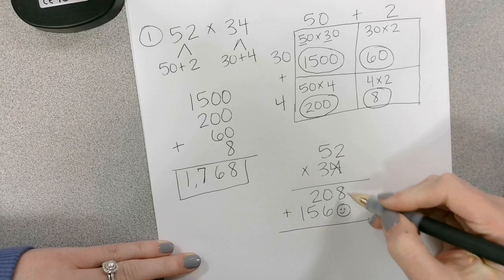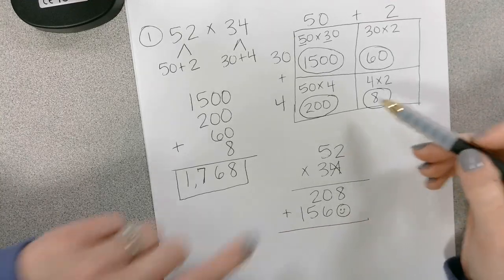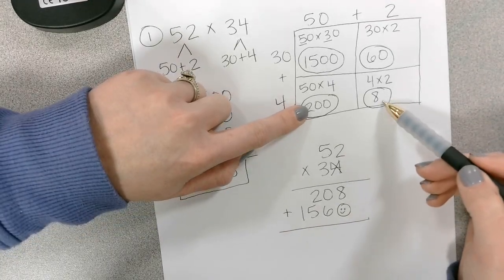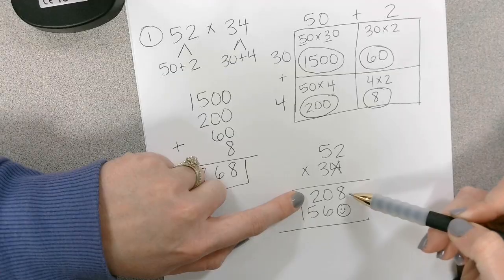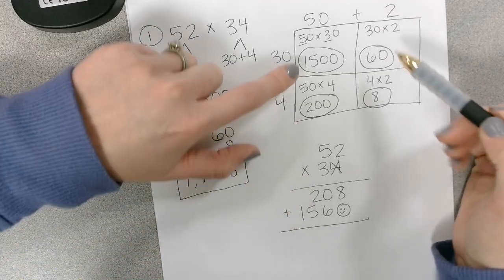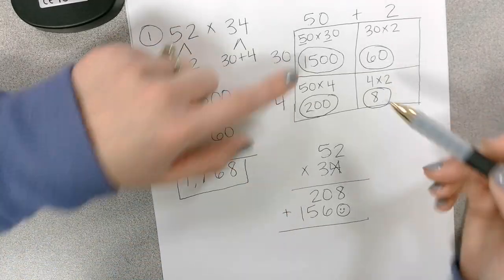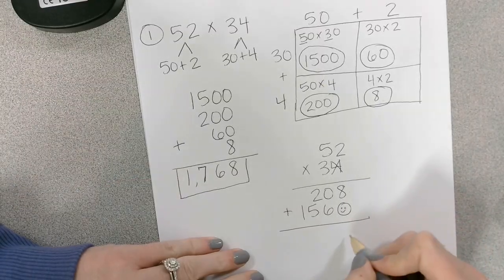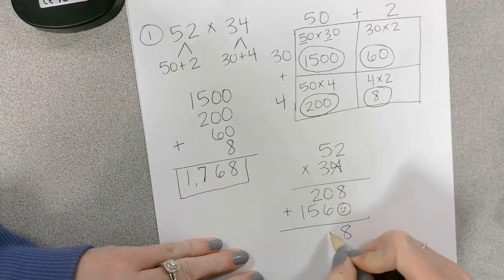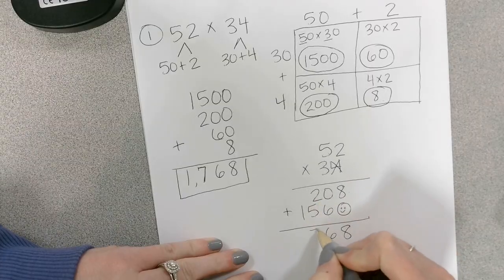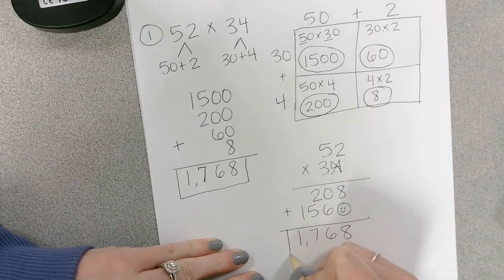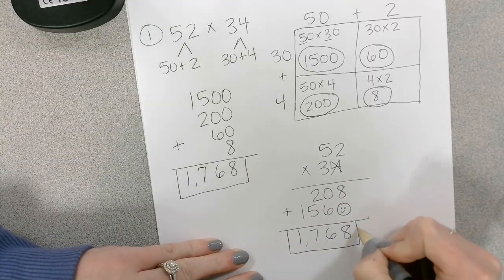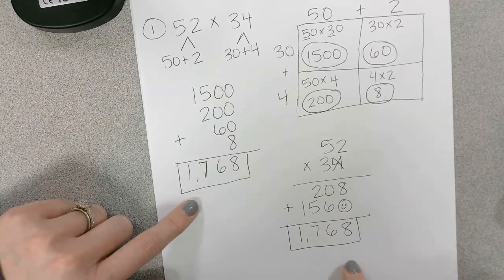Now we add, these are also partial products. And if you look, 200 plus 8 is 208, which is our first partial product. And 1,500 plus 60 is 1,560, which is our second partial product. So 8 plus 0 is 8, 0 plus 6 is 6, 2 plus 5 is 7. I bring down that one. So 1,768 is our answer.